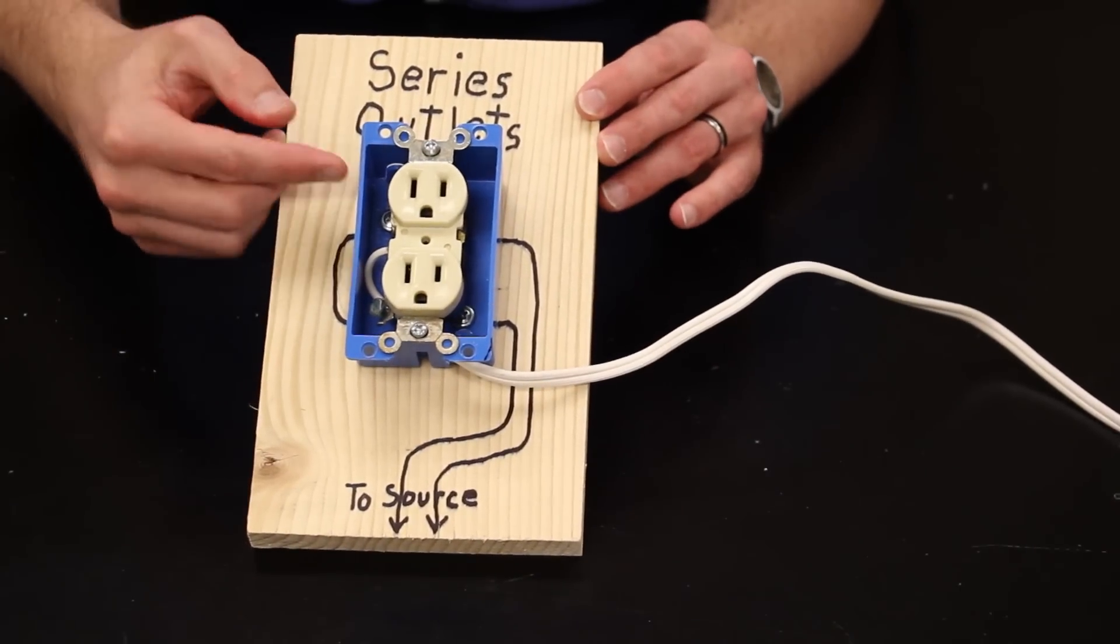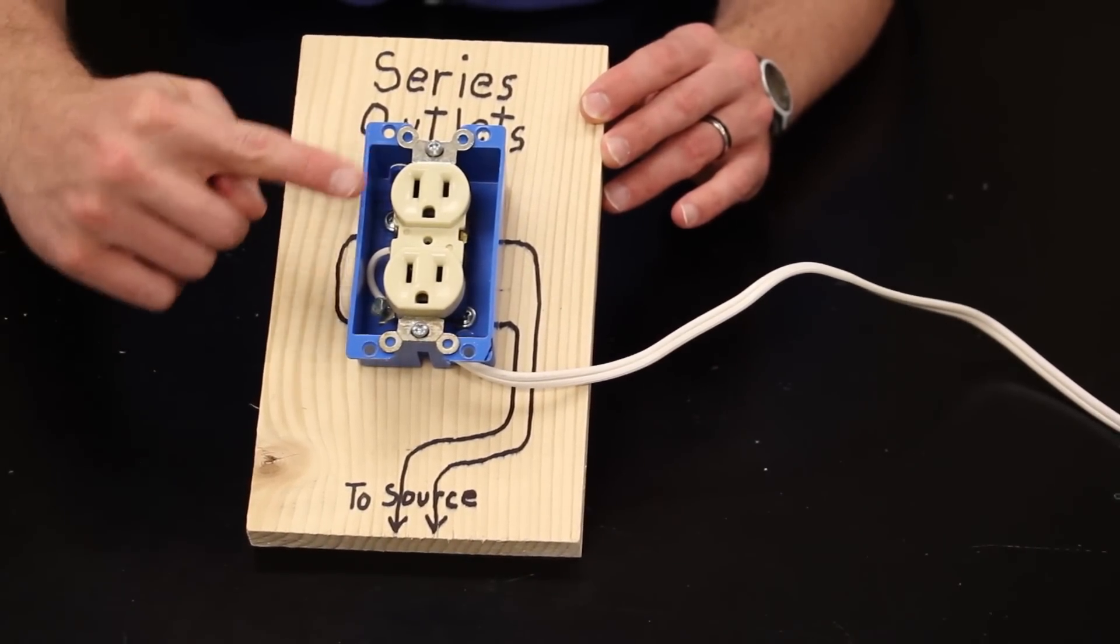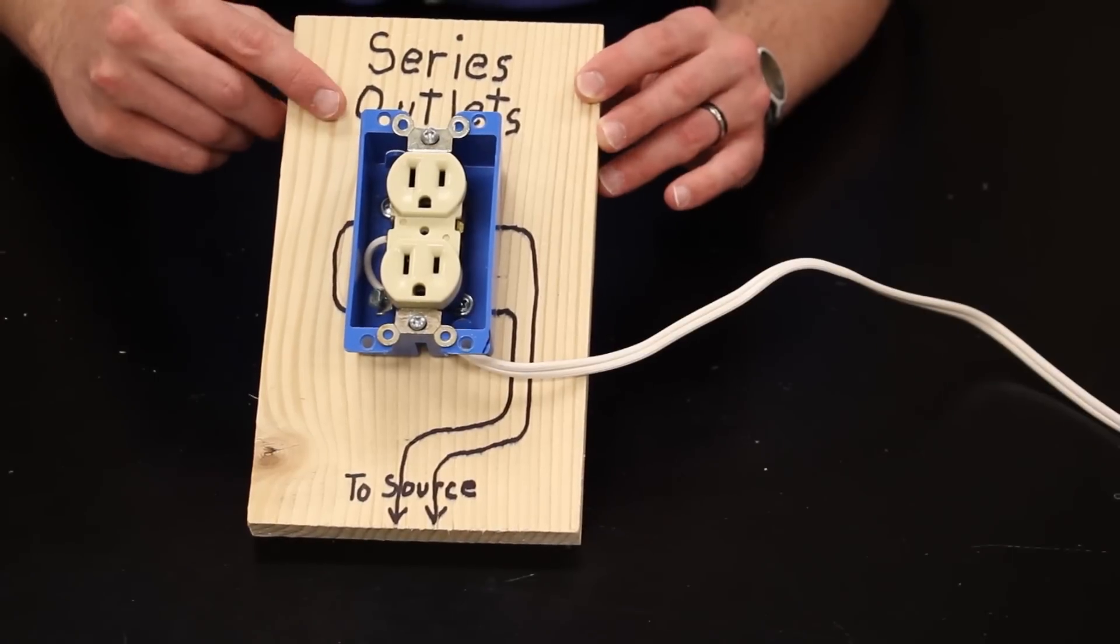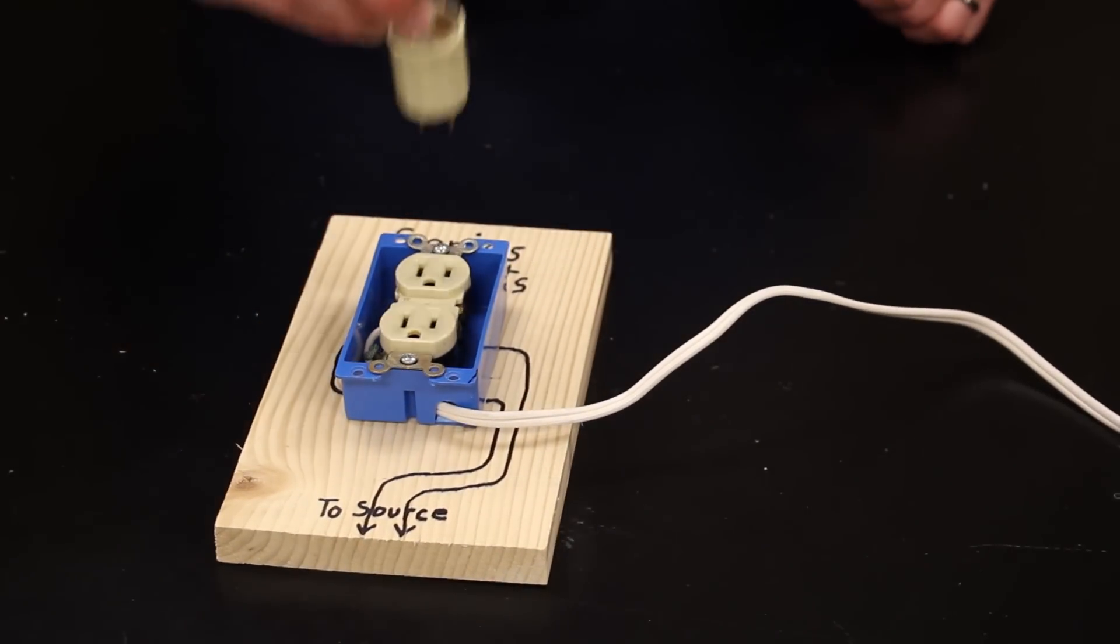And now we have our series outlet. Mount this in an outlet box for safety, and clearly label it as a series outlet. It's not unsafe to mistake this for a regular outlet, but most items will probably not work in it.